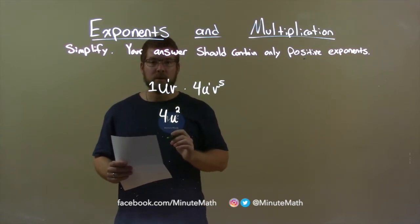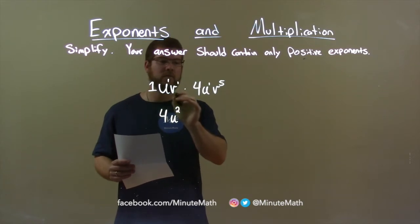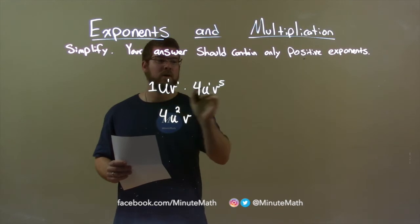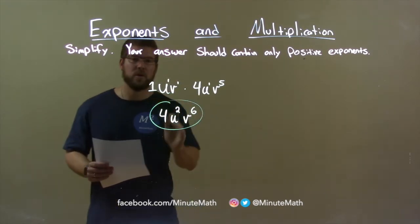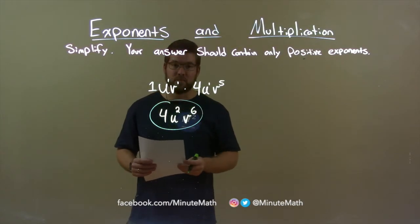Next variable I see is a v. Same principle applies. v to the first power here, v to the first times v to the fifth. Again, we add the exponents. 1 plus 5 is 6. And so my final answer is 4u squared times v to the sixth power.